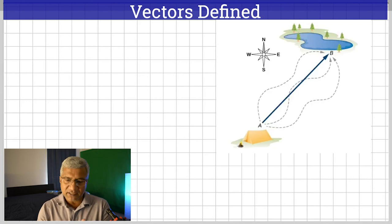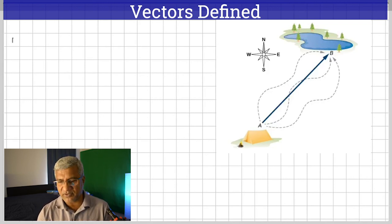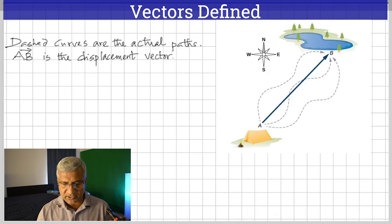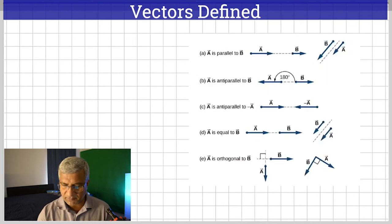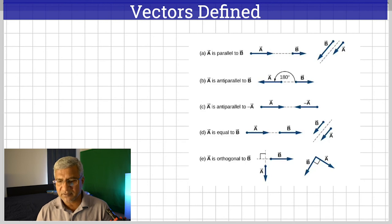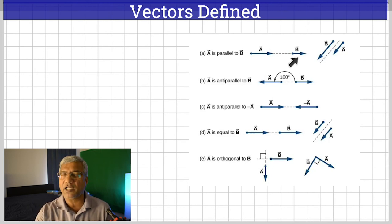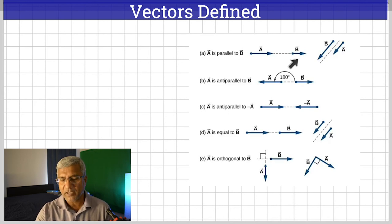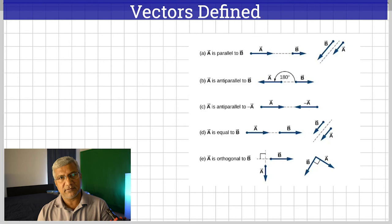So that clearly gives you an example of what a vector is. The dashed curves are the actual paths, and A to B is the displacement vector. Now, some fundamental properties of vectors: A and B are not equal vectors — A is bigger than B — but they are parallel. A is parallel to B.